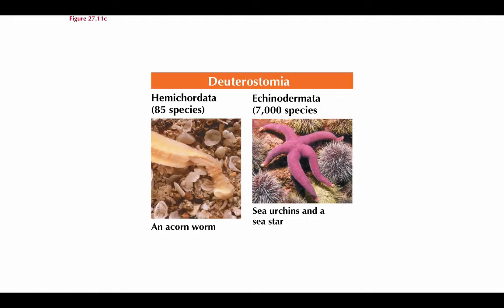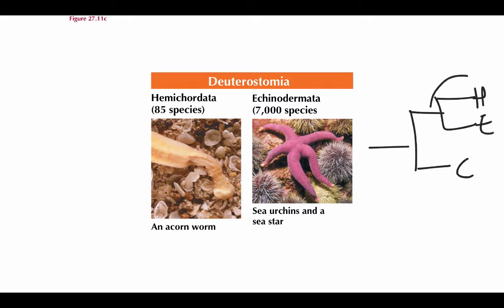The other non-chordate phylum in deuterostomia is the Hemichordata, or acorn worms. We don't talk about those too much, but they are deep-sea dwellers that can be very, very long, and have some interesting characteristics that are sort of like a chordate but not quite. Do remember though that they are not most closely related to chordates — hemichordates and echinoderms are sister phyla, and the chordates branched off before that. However, we do use hemichordata to see transitional features between non-chordates and chordates.